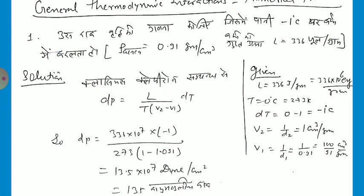The change in temperature is minus 1 degree Celsius. V2, the final volume, is the reciprocal of density of ice, so V2 is 1 centimeter cube per gram. And V1, the initial volume, is 1 by d1 equal to 1/0.91, that is 100/91 centimeter cube per gram.